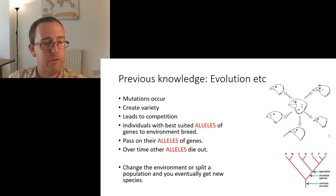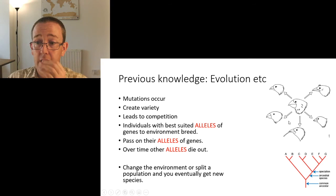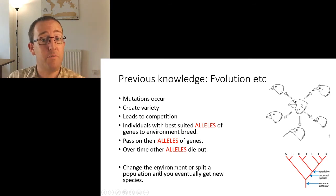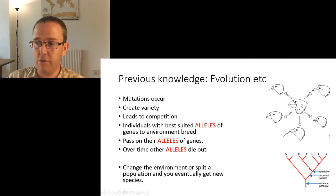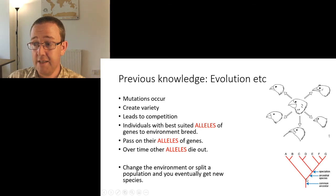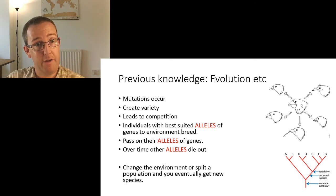You may have been given various examples at GCSE: peppered moths, grey squirrels, Darwin's finches. That change — whether through a change in the environment or a split in the population — eventually leads to new species. That's the process of speciation, which you also will have covered at GCSE. And it leads to evolutionary tree diagrams like Darwin's famous tree of life, where you have an ancestral species with splits occurring to produce new lineages.